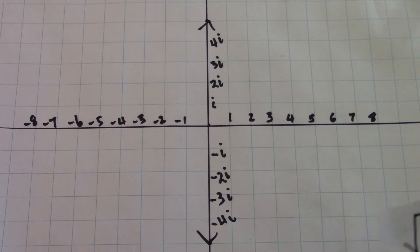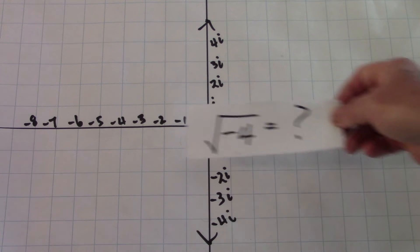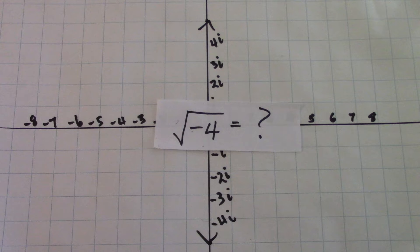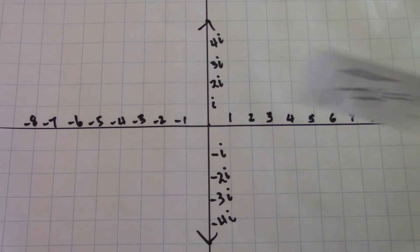Well, in studying algebra early on, we were given square root negative four. Well, you can't take the square root of a negative number. And we'll let it go at that.